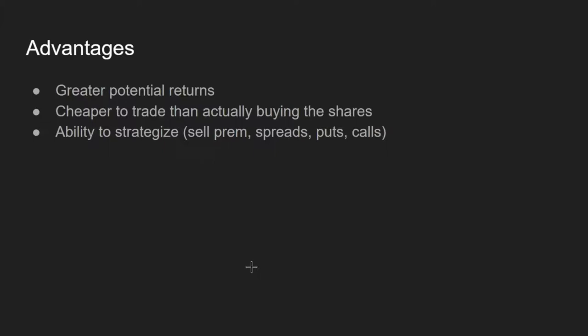Options are cheaper to trade than actually buying shares because you're leveraging — you have the ability to control 100 shares of that stock. You can get an options contract for $100 to $300 when trading weeklies, which a lot of people do. With some contracts, members at Xtrades can double their money in one day, which is pretty much unheard of when buying shares directly.